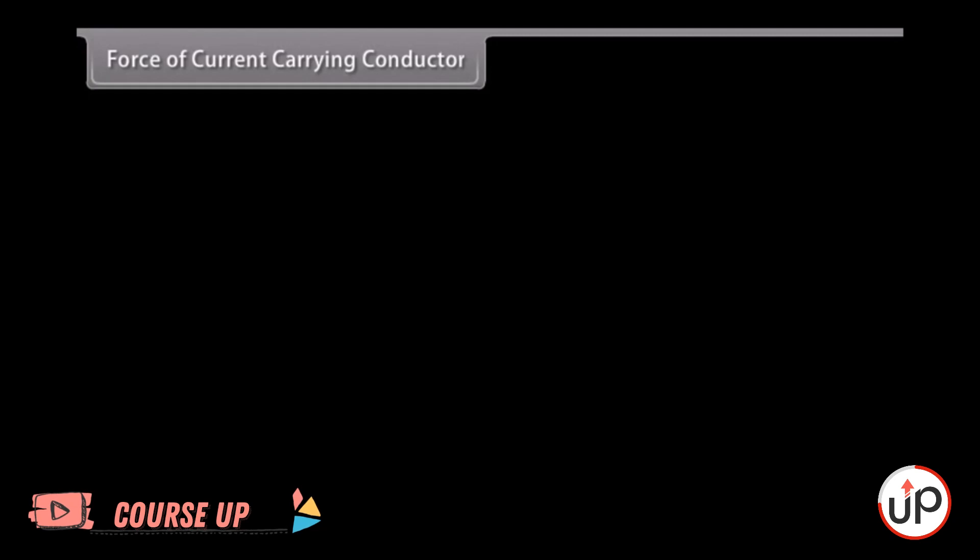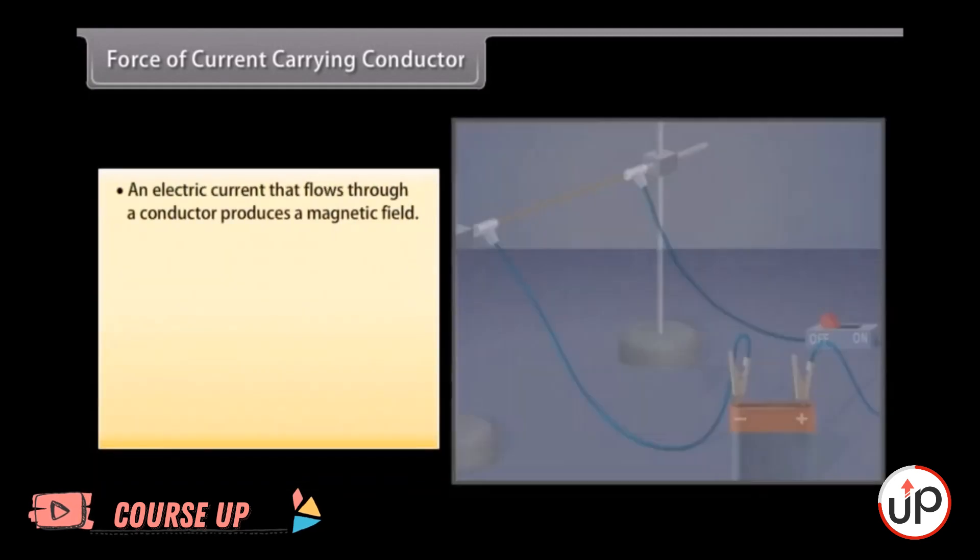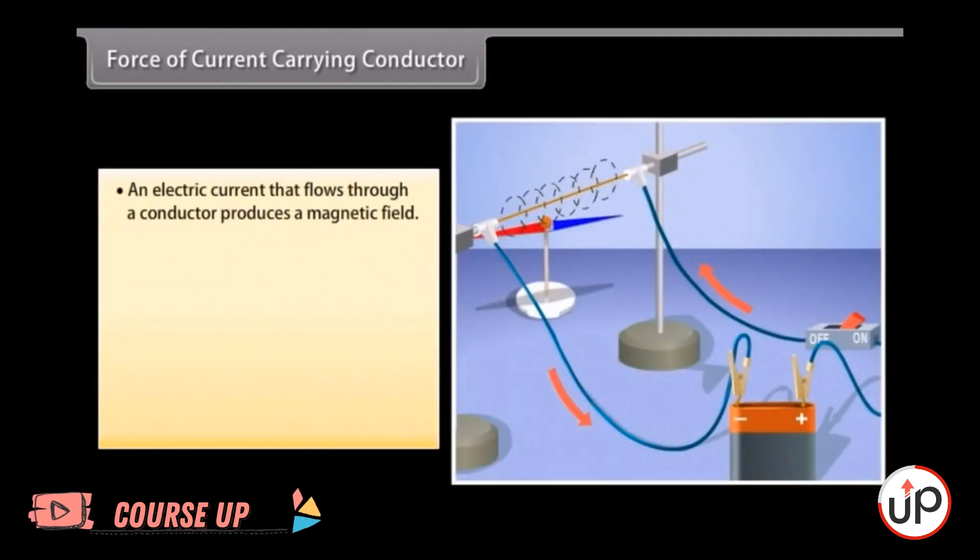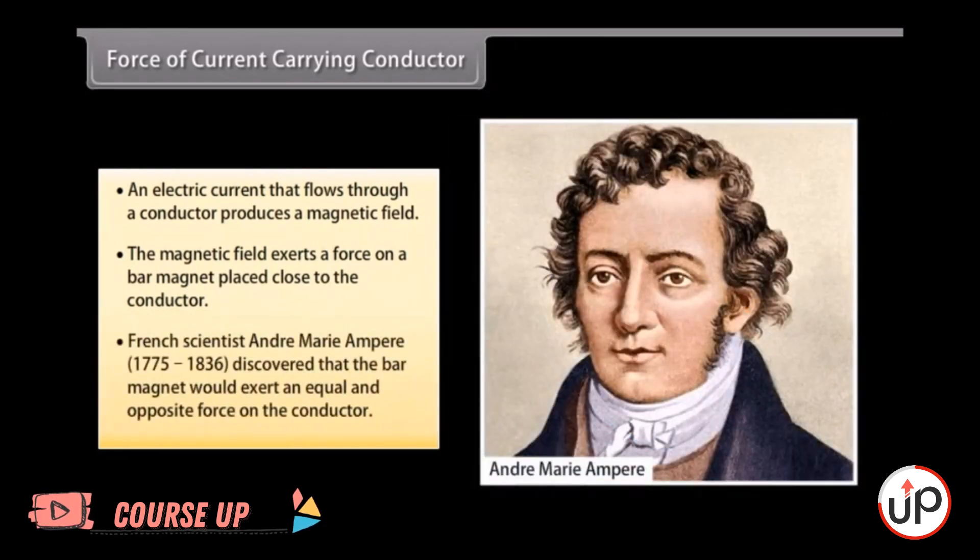Force of current carrying conductor. We have seen that an electric current that flows through a conductor produces a magnetic field. The magnetic field so produced exerts a force on a bar magnet placed close to the conductor. French scientist André-Marie Ampere (1775-1836) discovered that the bar magnet would also exert an equal and opposite force on the conductor.